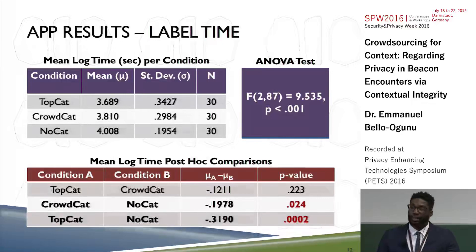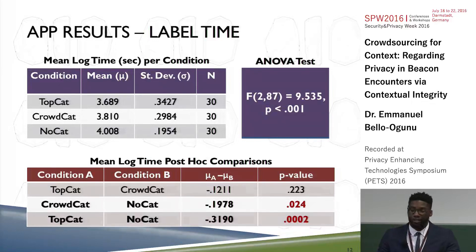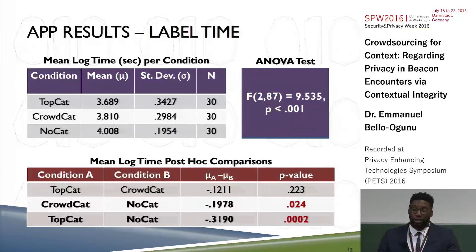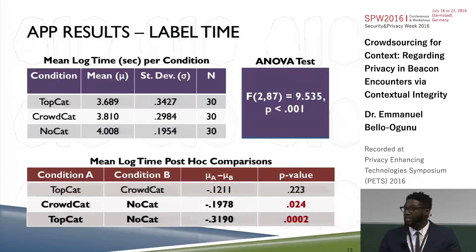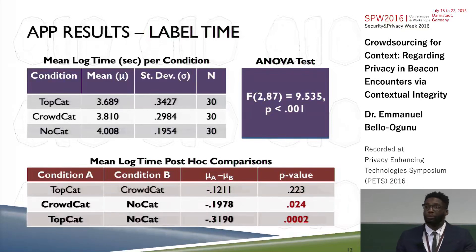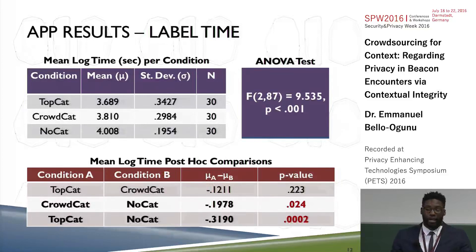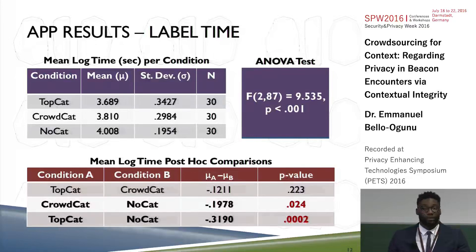Performing a similar test on label time — the amount of time it took users to provide these labels — I first transformed the time since it's not a normally distributed variable. After a logarithmic transformation, I did a one-way ANOVA and again found a p-value less than 0.01, confirming a difference in label time between the three groups. The results were very similar: both the CrowdCat and TopCat groups performed better than the NoCat group, but there was not a significant difference between TopCat and CrowdCat. That's the result we wanted — we can say the crowd can do this just as efficiently as the group given the correct label right away.